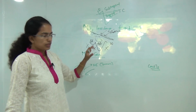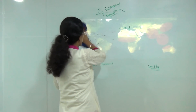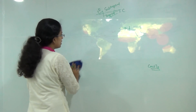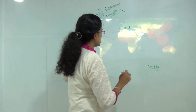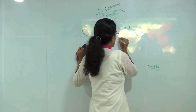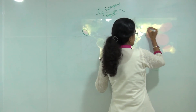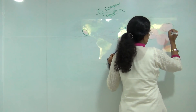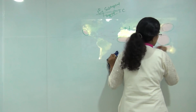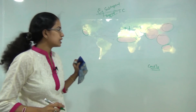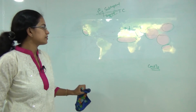Moving on to the areas where monsoon activity is predominant, on the world map you have the northwest part of the United States, central parts of Africa, the Indian subcontinent, parts of eastern Asia, parts of southeast Asia, and the northwestern part of Australia — these are the major hubs for monsoonal activities.